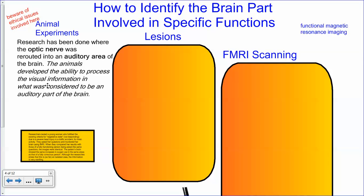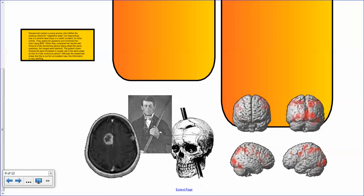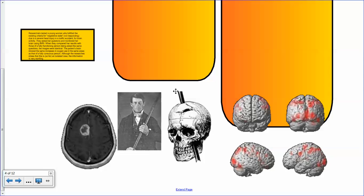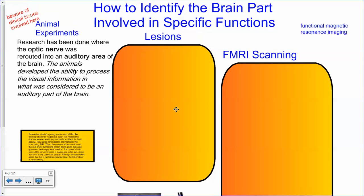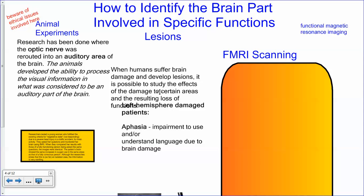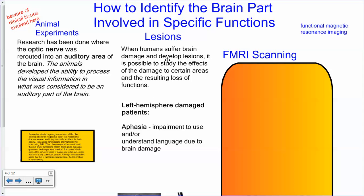The animals developed the ability to process visual information in what was considered to be an auditory part of the brain. So it seems like you can make connections between different parts of the brain by rewiring. Occasionally some accidents happen — like Phineas Gage, who had an explosion drive a metal rod straight through his head. People said he had a bit of a behavioral change afterwards — he survived it, which is useful for scientists. When humans suffer brain damage and develop lesions — parts of the brain that are not functioning or have changed function — it is possible to study the effects of damage to certain areas and the resulting loss of function.